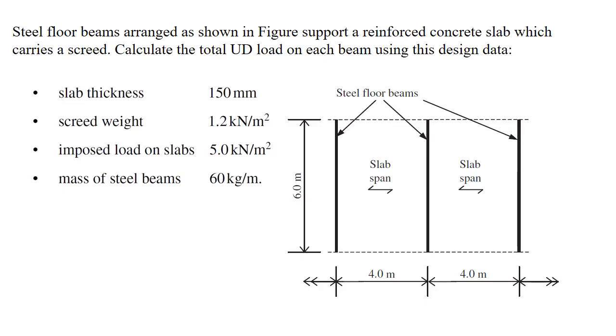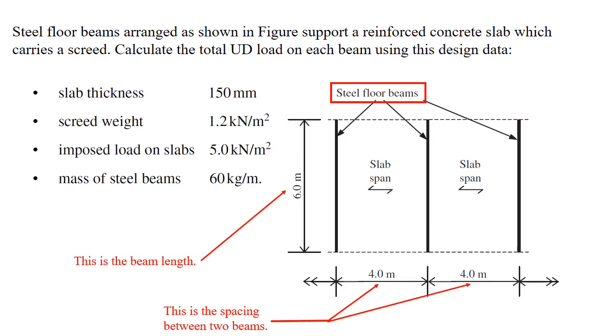Values of slab thickness, screed weight, imposed load on slab, and mass of steel beams are available in the design data. In the figure, you can see beams are marked as steel floor beams. This is the beam length, and this is the spacing between two beams.